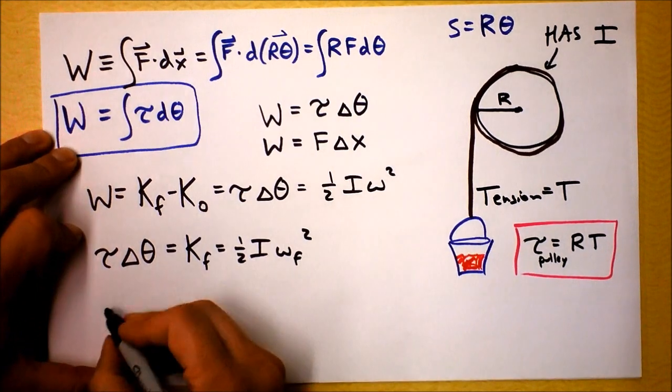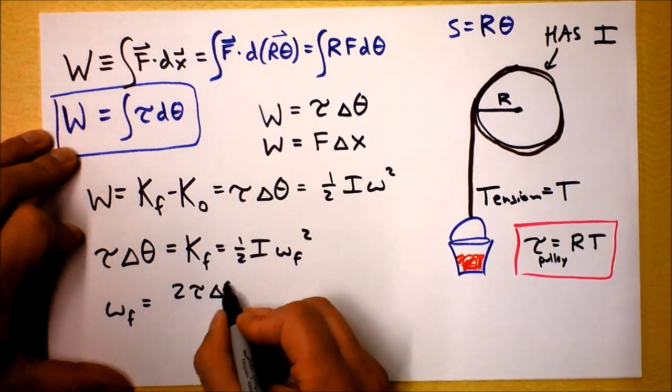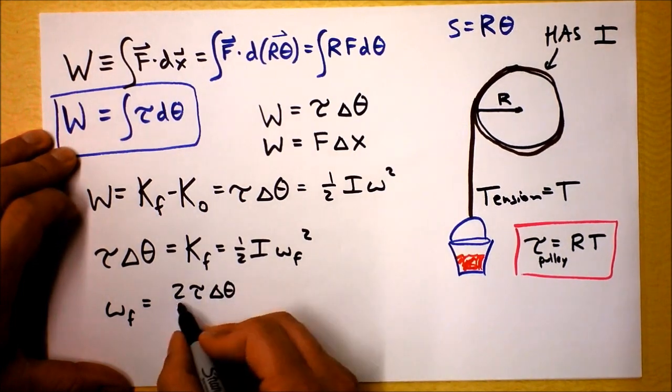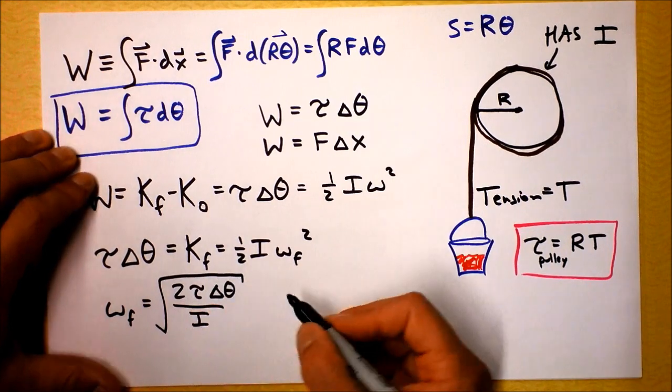So we can solve this for omega final. Let's do it. Omega final, we're gonna get two times torque times delta theta, and we're gonna have to divide it by I, and then we're gonna have to square root it.